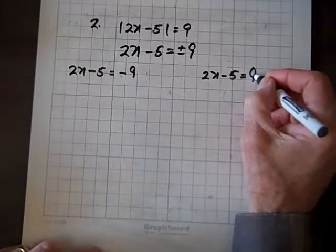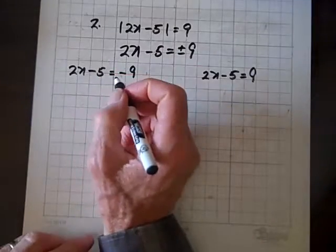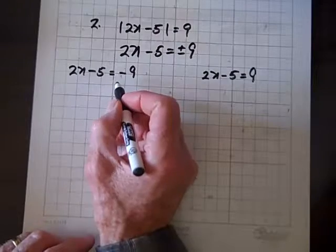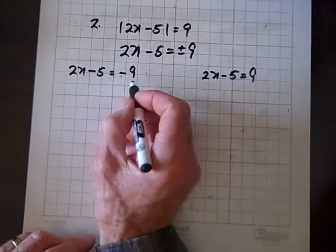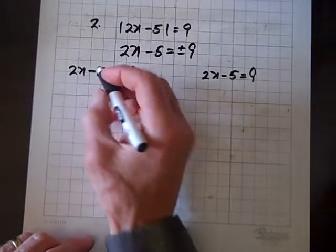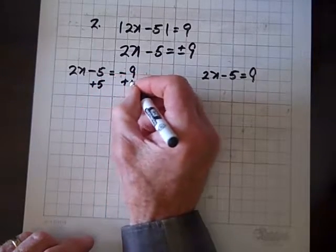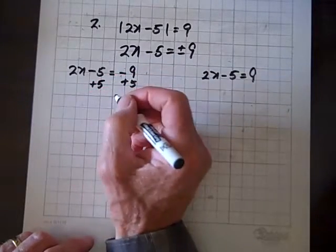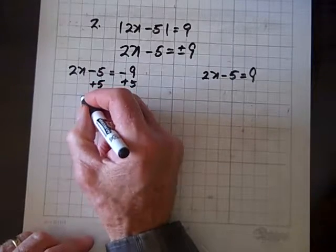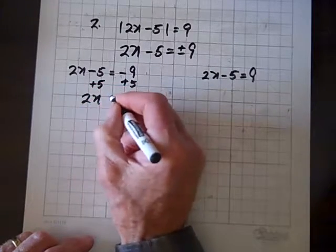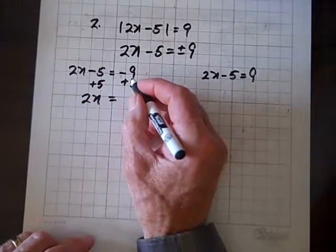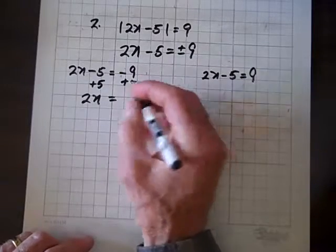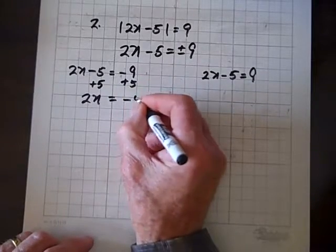We're going to get two different solutions. So now let's do what we've been doing. This is easy to solve. We'll add 5 to both sides, and now we have 2n equals negative 9 plus 5, which is negative 4.